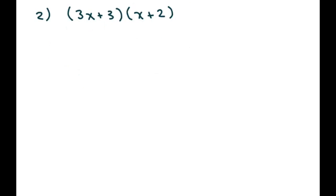And this one, we're going to foil. So we're doing first, outer, inner, last. So the first is 3x times x. The next one is outer. So that's going to be plus 3x times 2.